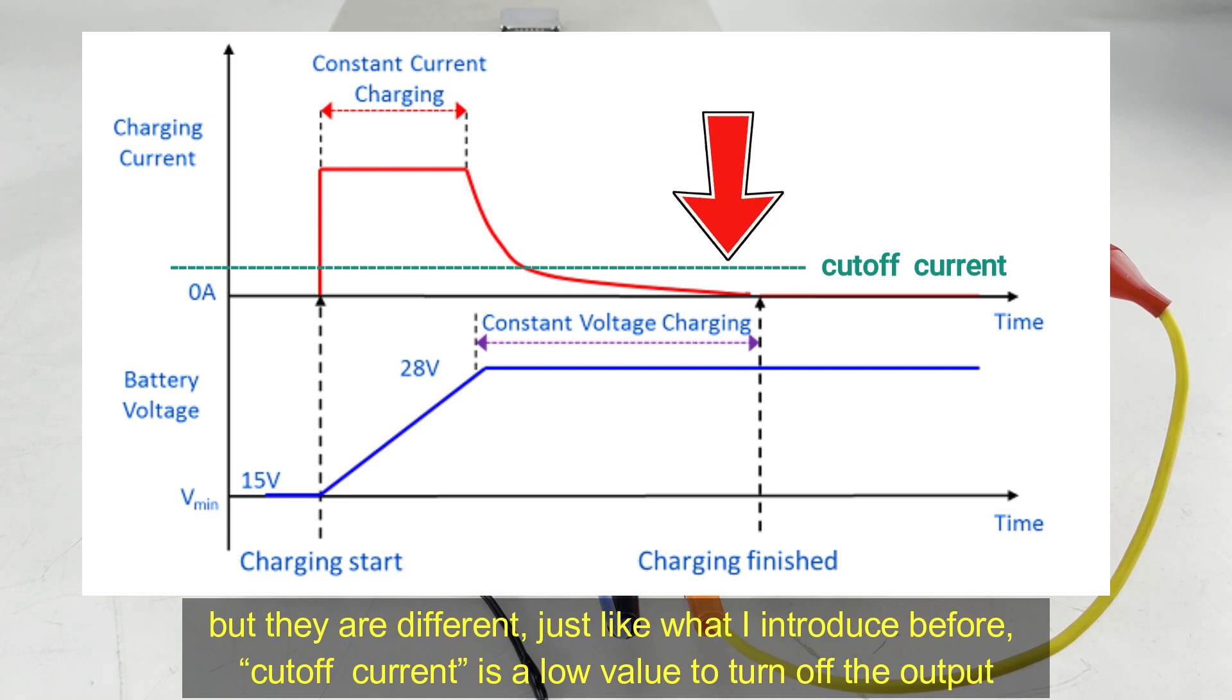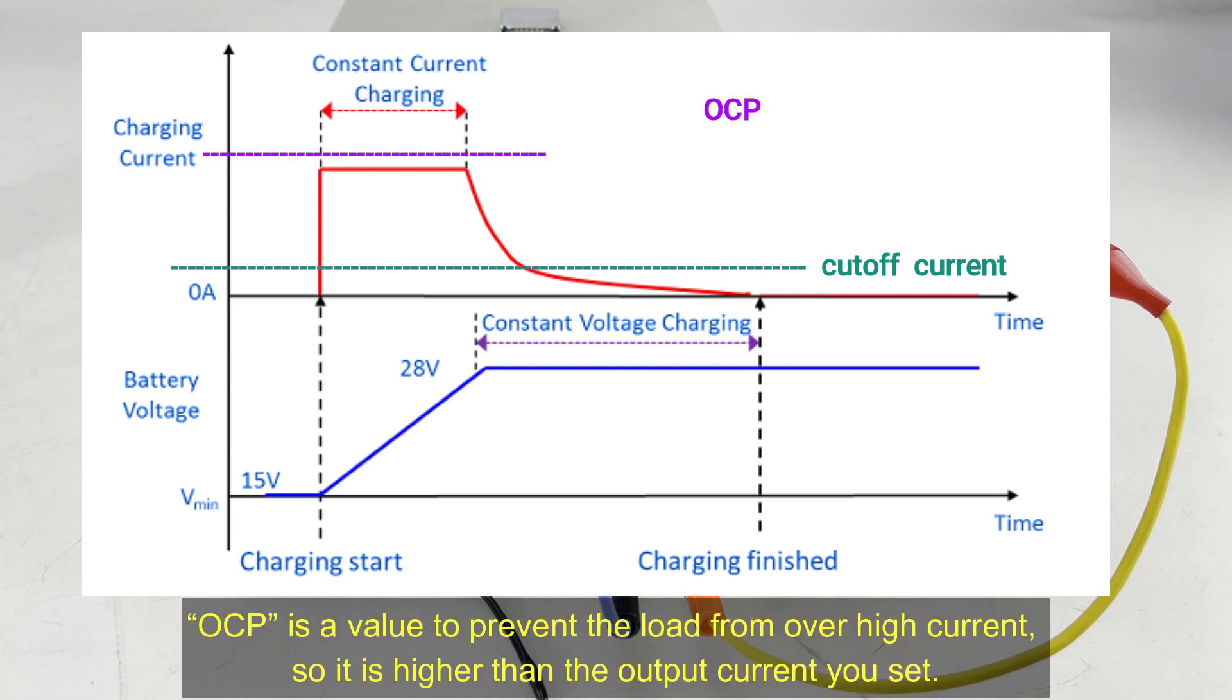Cut-off current is the low value to turn off the output. OCP is the value to prevent the load from the over-high output current, so it is higher than the output current you set.